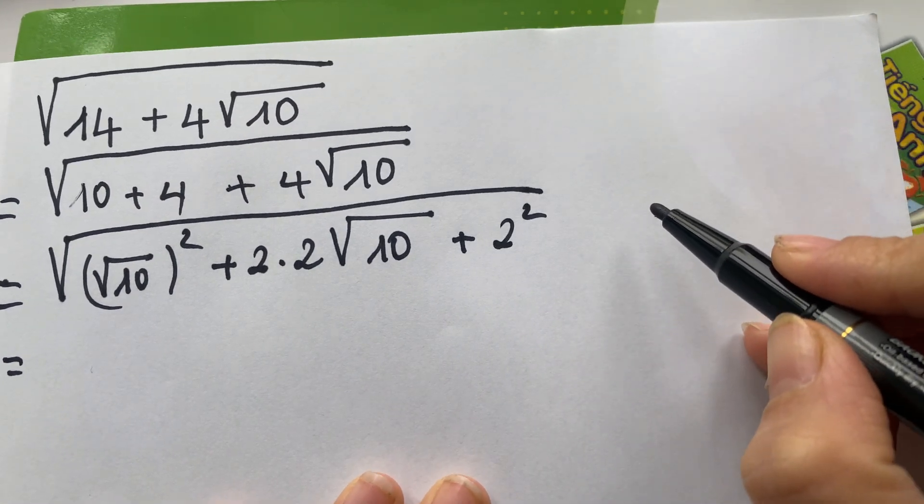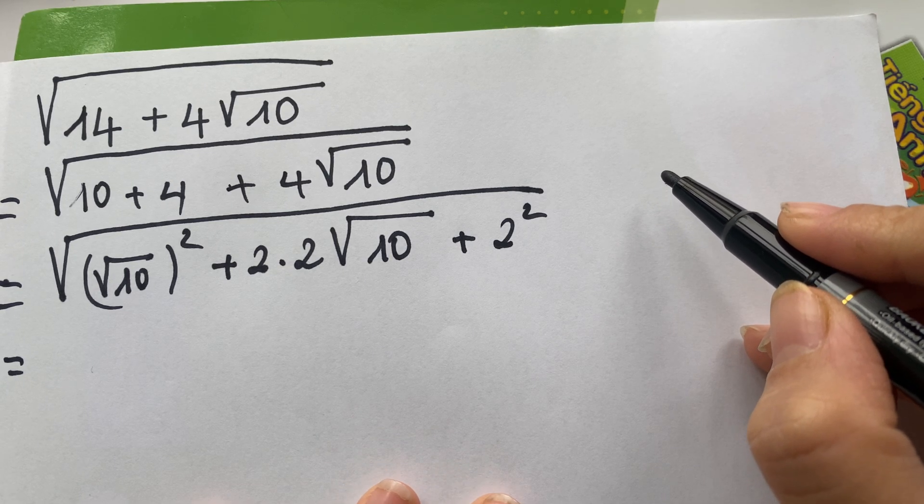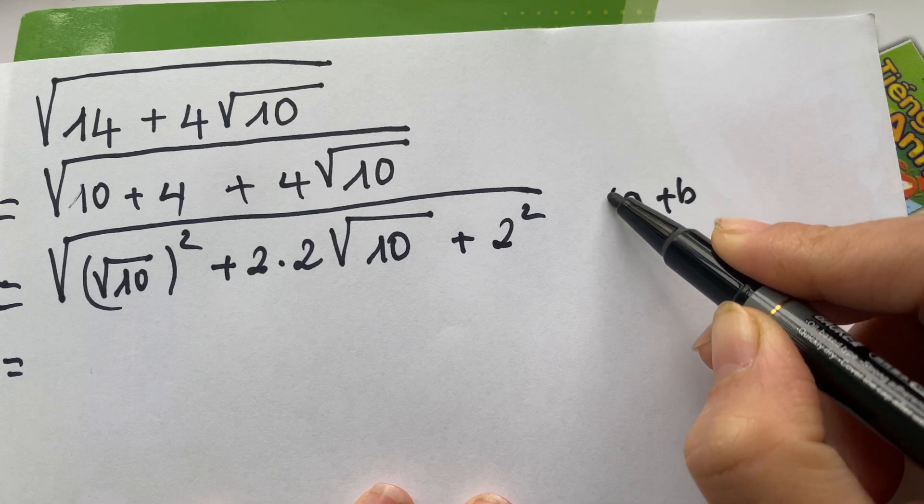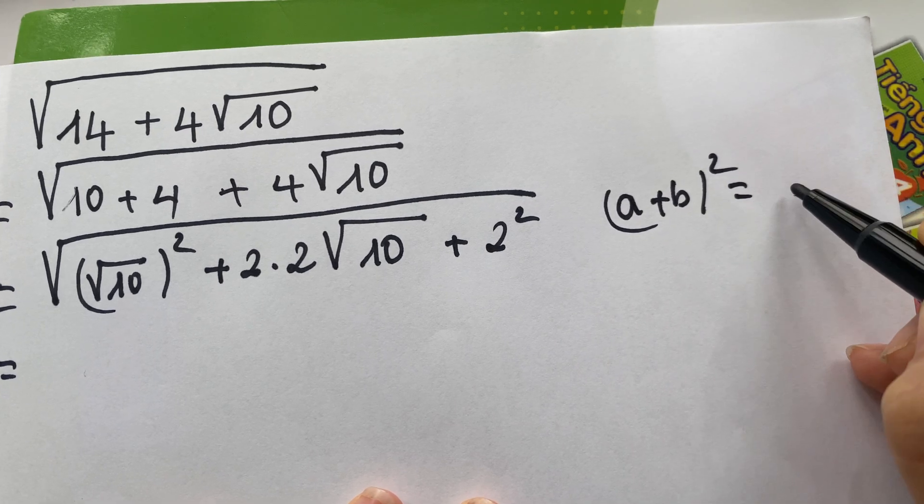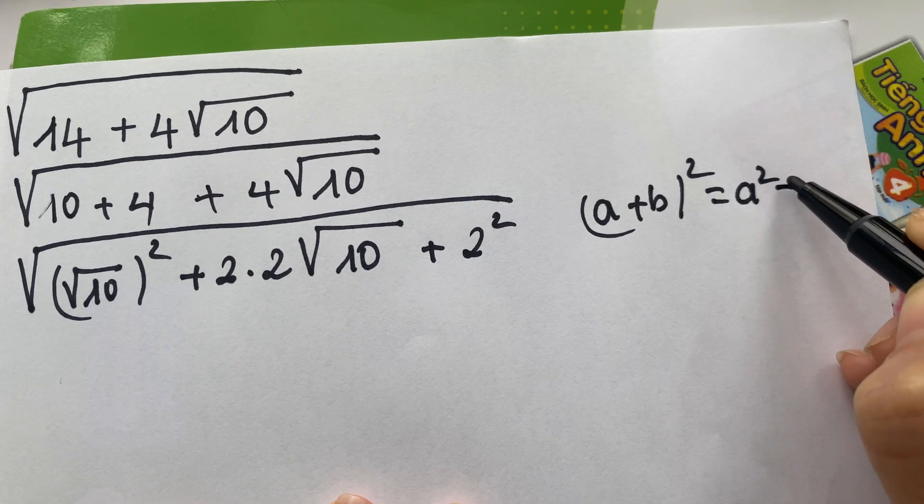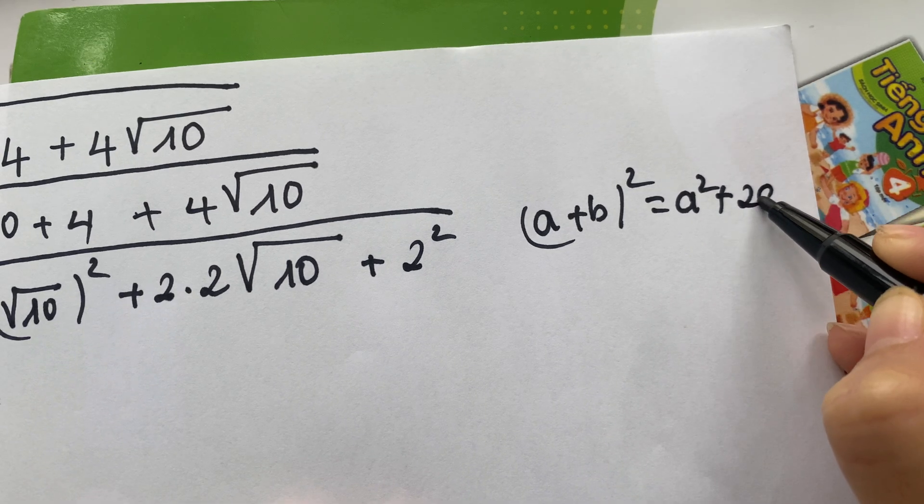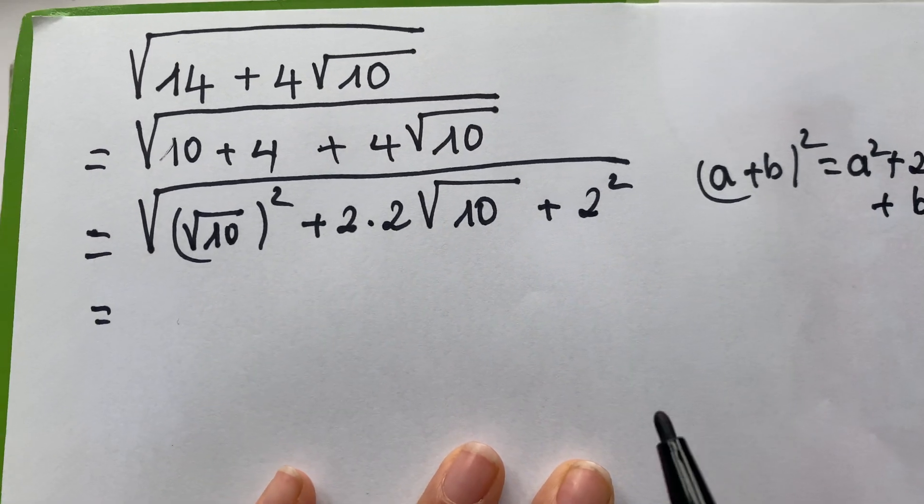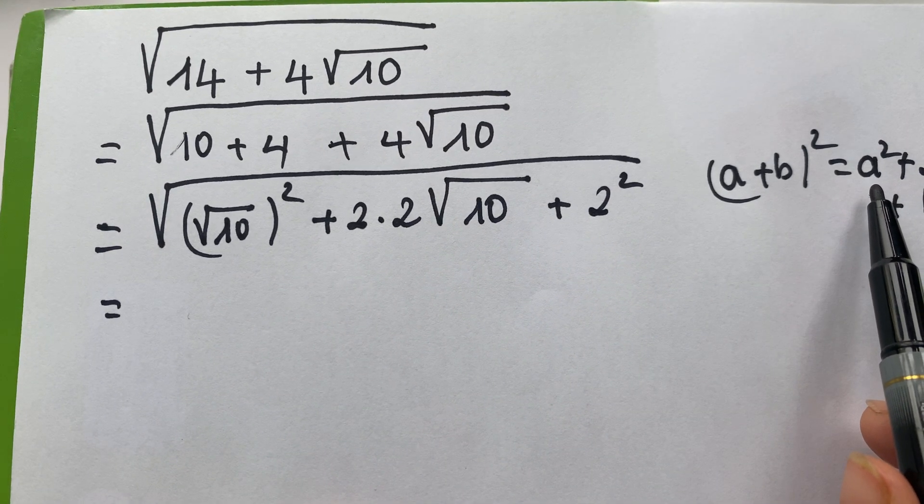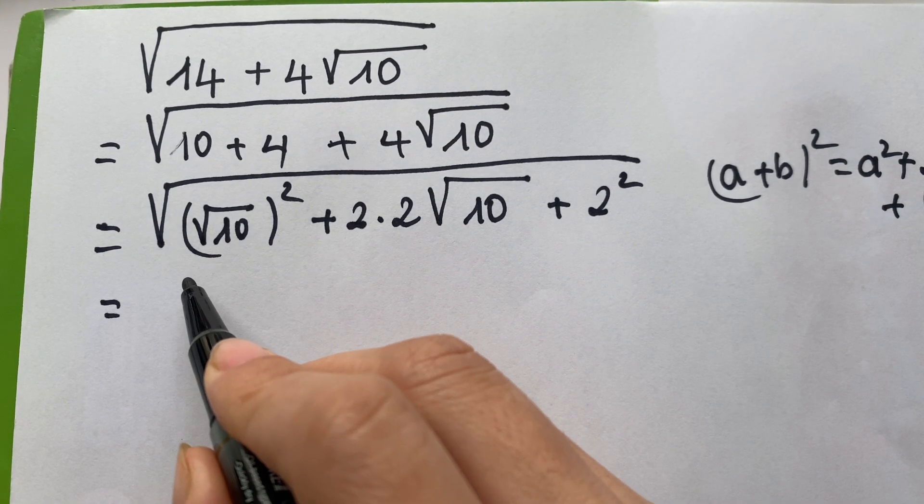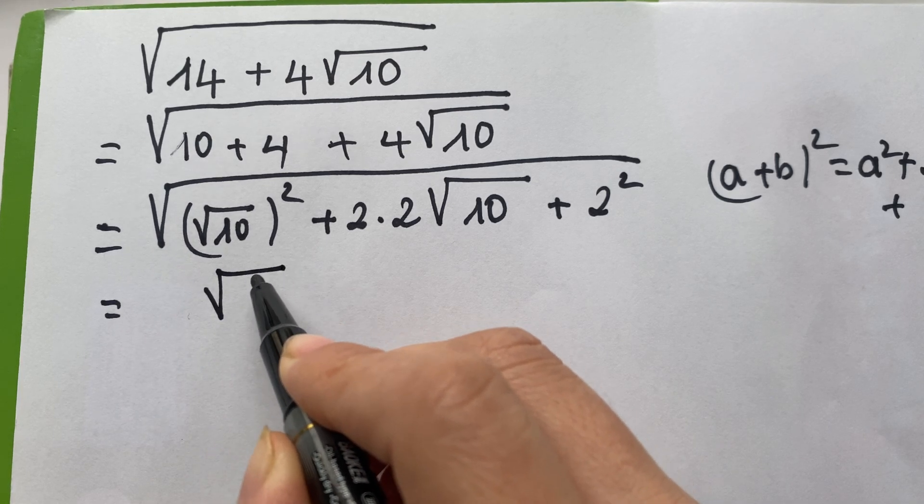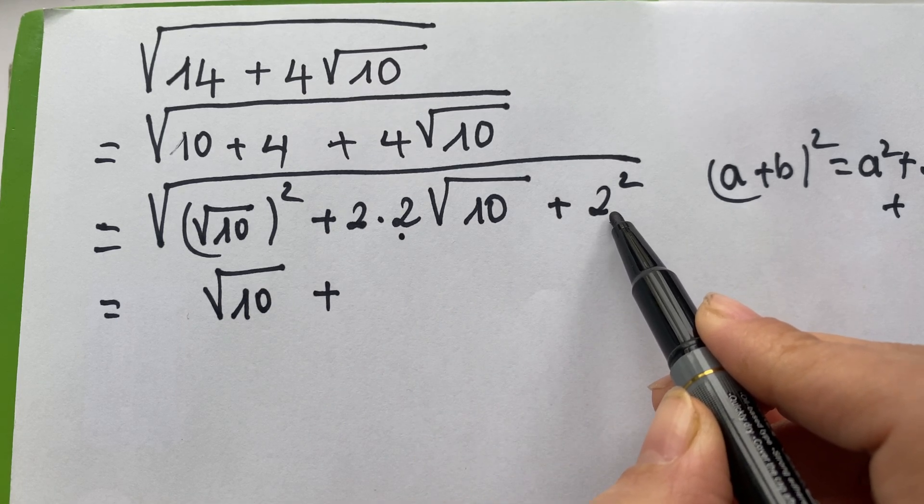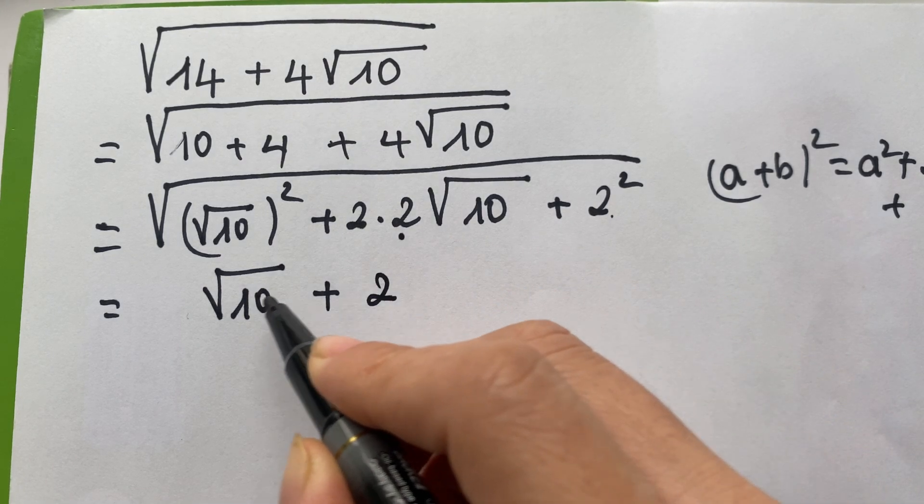You see the identity, the sum of squares: a plus b bracket square equals a square plus 2ab plus b square. Everyone see a square is the same as square root of 10 plus 2 square plus 2.